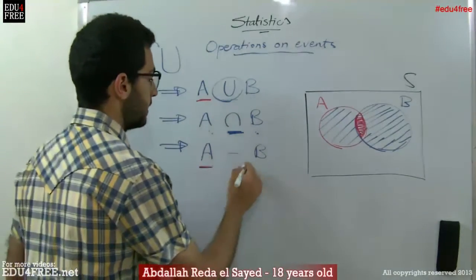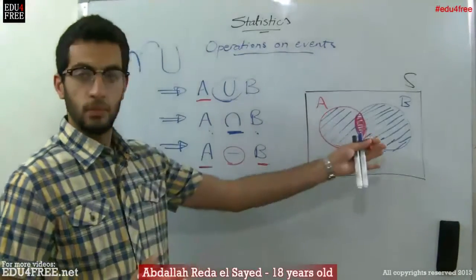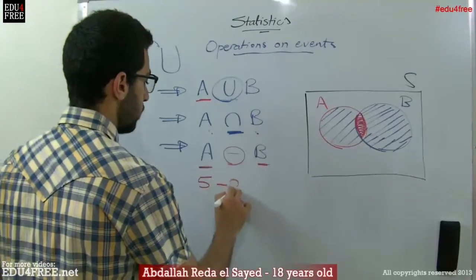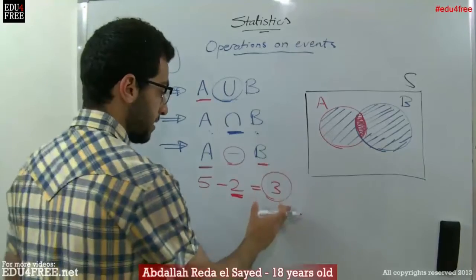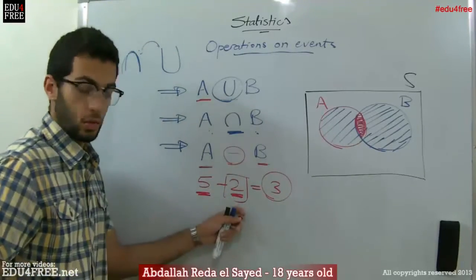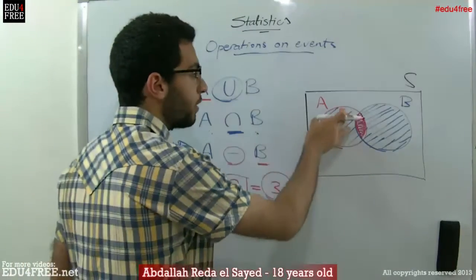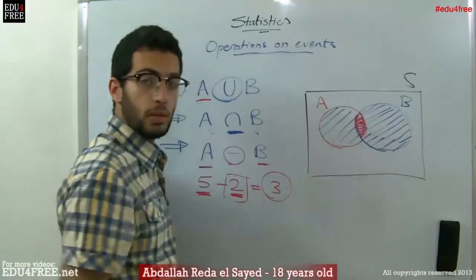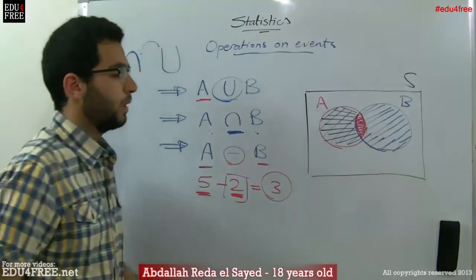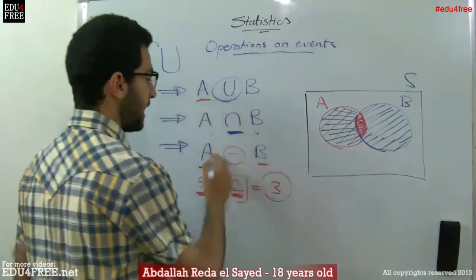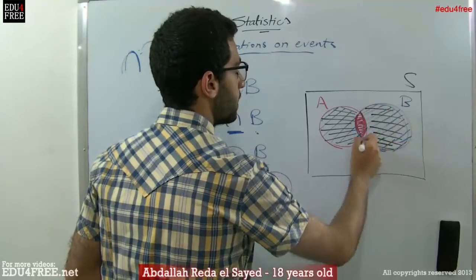And then we have A minus B, which means the part of A which is not included in B. This is like math when we say 5 minus 2 equals 3 — meaning there are 3 things included in the 5 that are not included in the 2. Here it's the same thing: A difference B means the part that's inside A and not included in B, which corresponds to this area. Accordingly, if we say B minus A, we will be talking about this part over here.